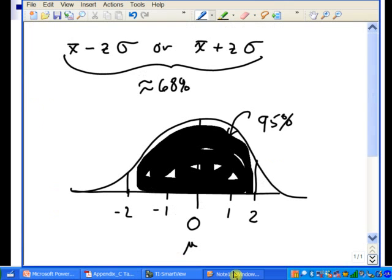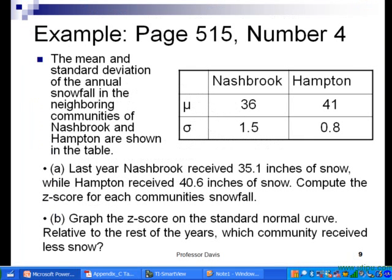That rule was called the empirical rule. It's a way we can estimate probabilities quickly. We'll talk about some more exact ways in just a minute. Let's take a look at an example and see how we can work with these standard values, the z-scores.